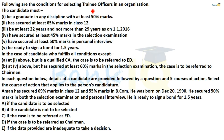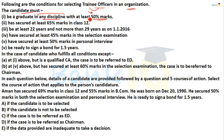The first question gives conditions for selecting a trainee officer in an organization. The candidate must be a graduate in any discipline with at least 50% marks, and has scored at least 65% marks in 12th standard.